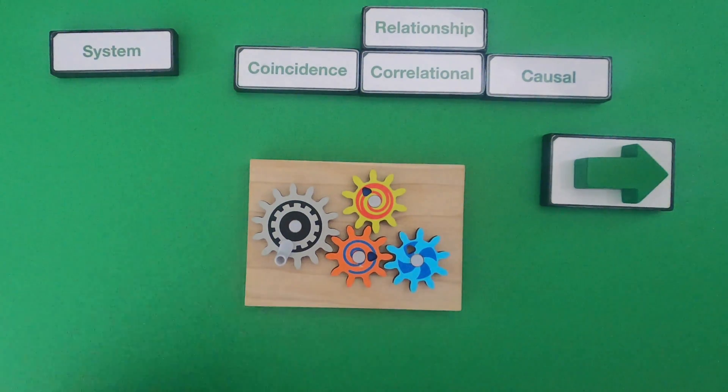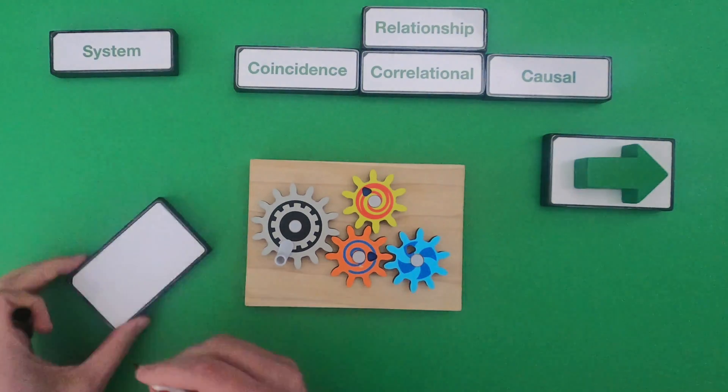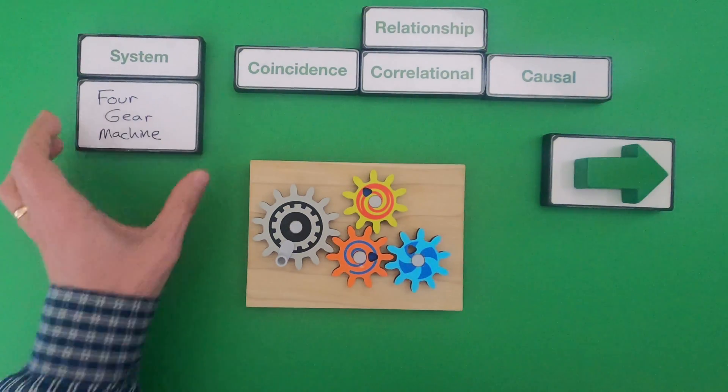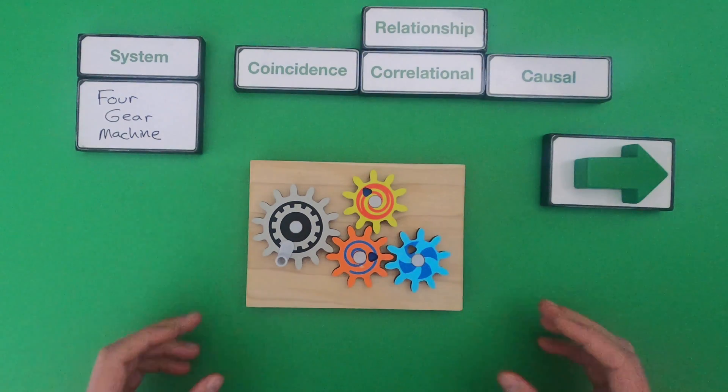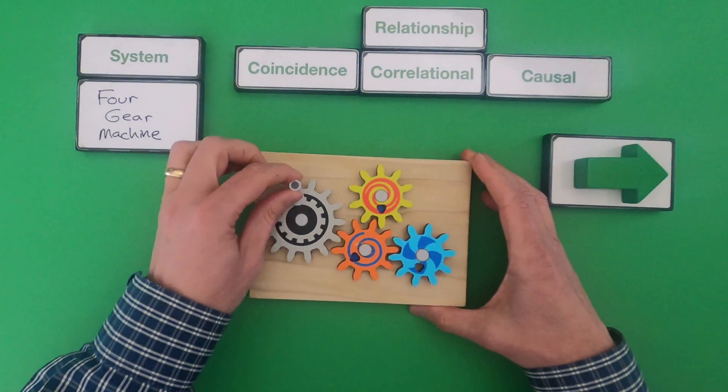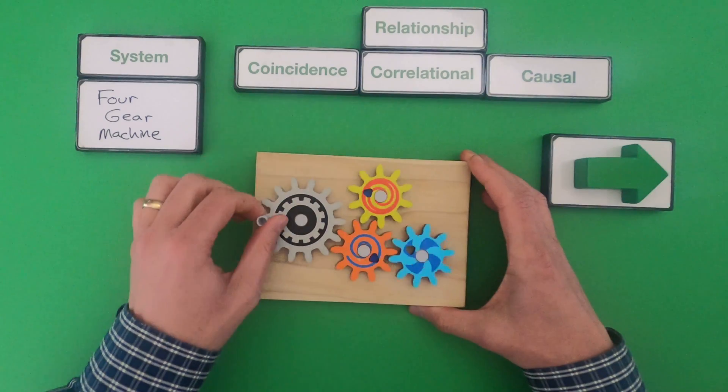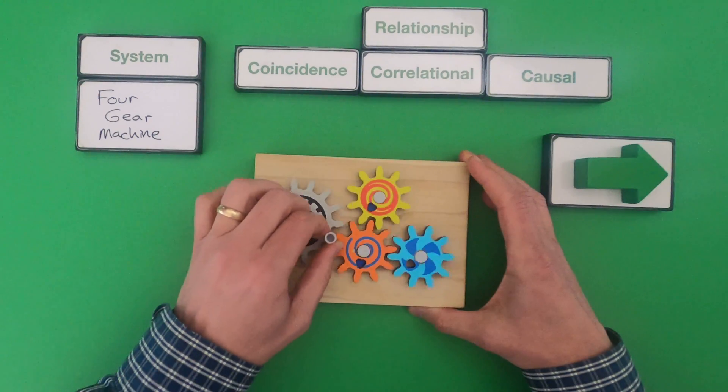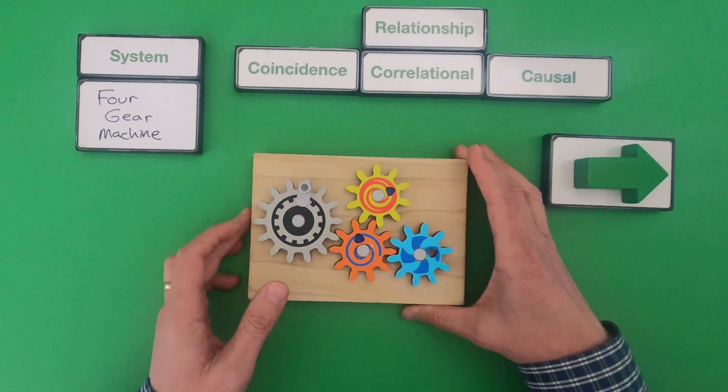So as always the first thing we should do is define the system. So we're going to be looking at relationships in a four-gear machine. We should play with it. So you can see as I move the gray gear you can see that's causing the other gears to move. So let's model the system.